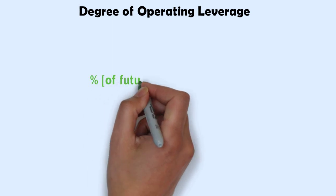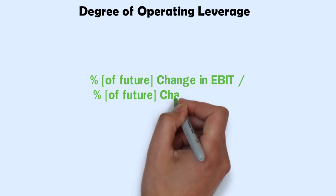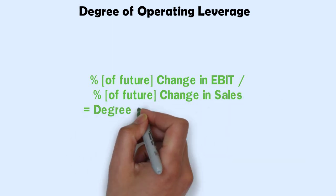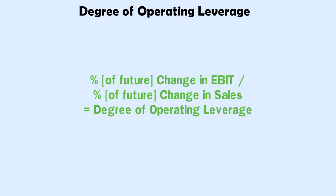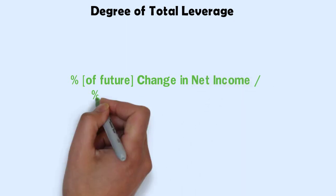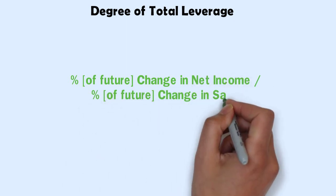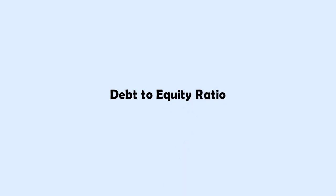Degree of Operating Leverage: Percentage of the future change in net income divided by the percentage of the future change in sales equals the degree of operating leverage. Degree of Total Leverage: Percentage of the future change in net income divided by the percentage of the future change in sales equals the degree of total leverage.